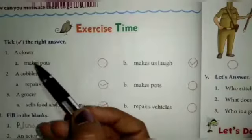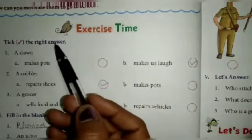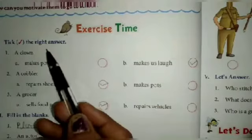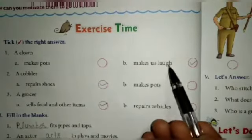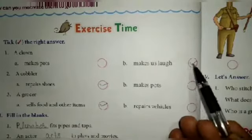Okay students, now exercise time. Tick the right answer. A clown makes us laugh. Makes us laugh is the right answer, so we can write here tick.